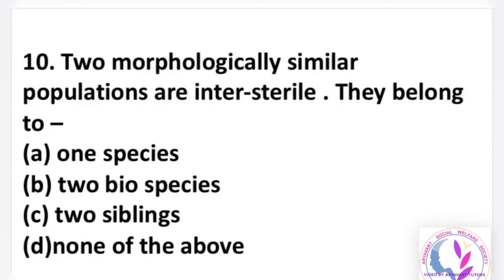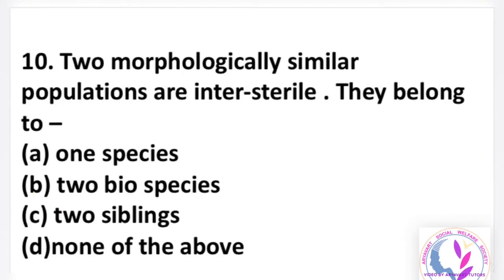Question number 10: two morphologically similar populations that are intersterile belong to — option A: one species, B: two biospecies, C: two sibling species, D: none of them. The answer is C, two sibling species. Morphologically similar means external features are alike — like siblings: brother-brother, sister-sister. So morphologically similar but intersterile populations are visualized as sibling species. Answer is C.